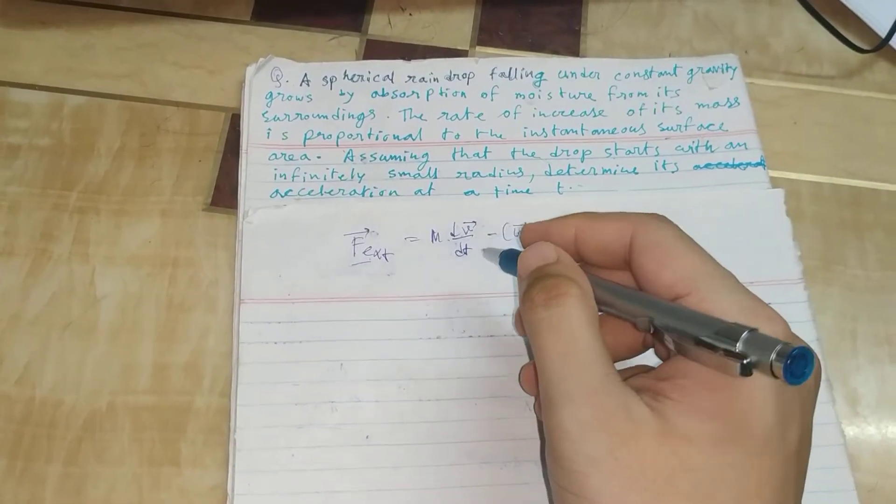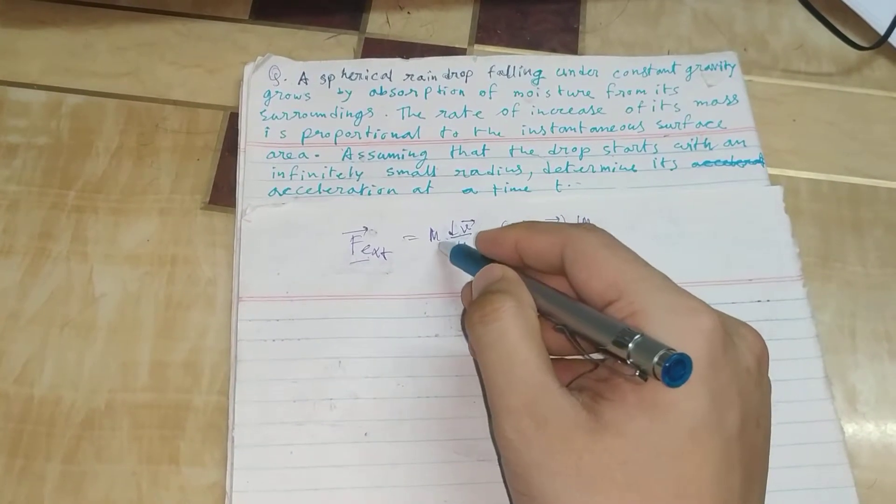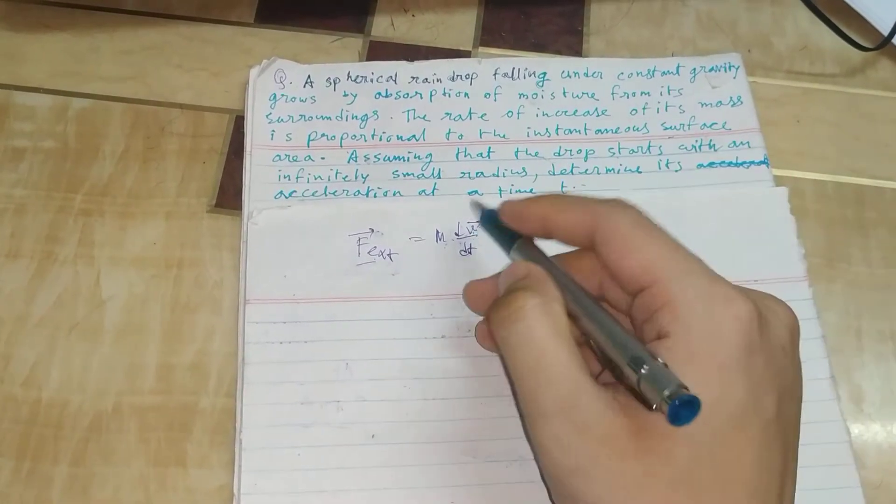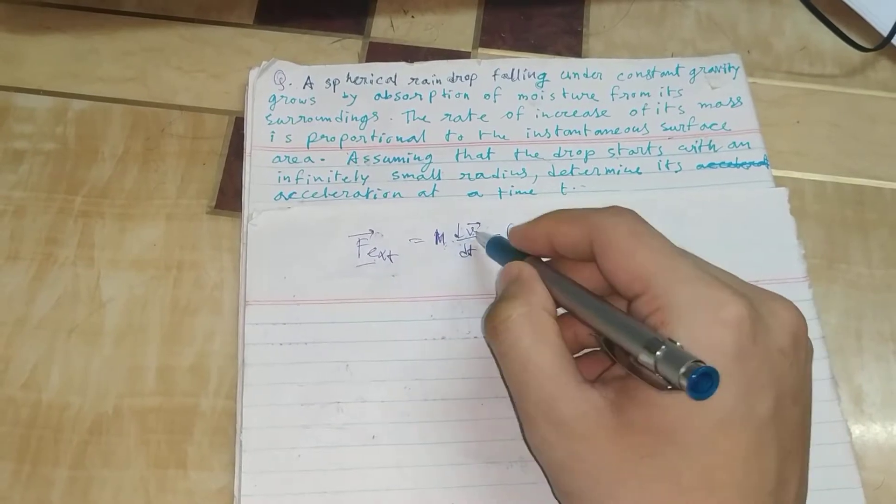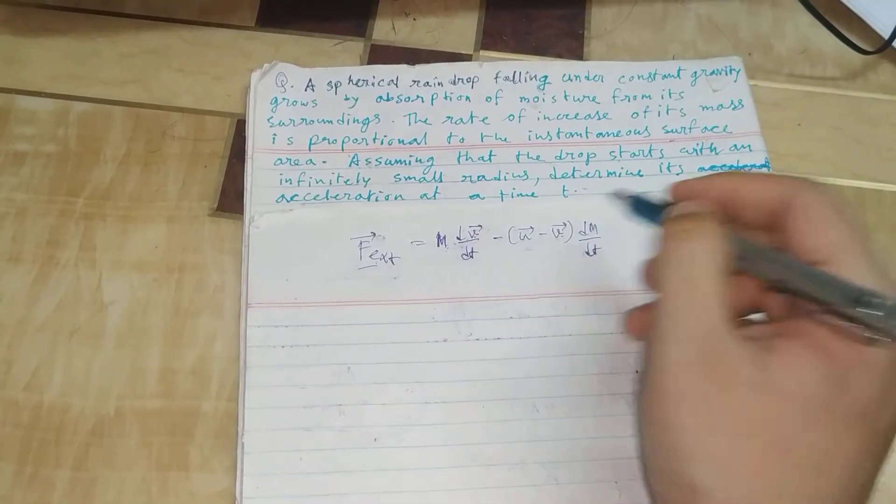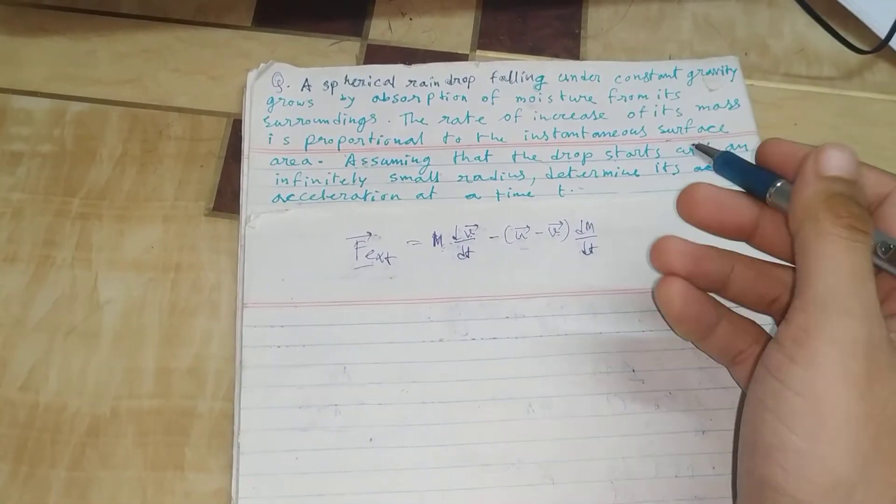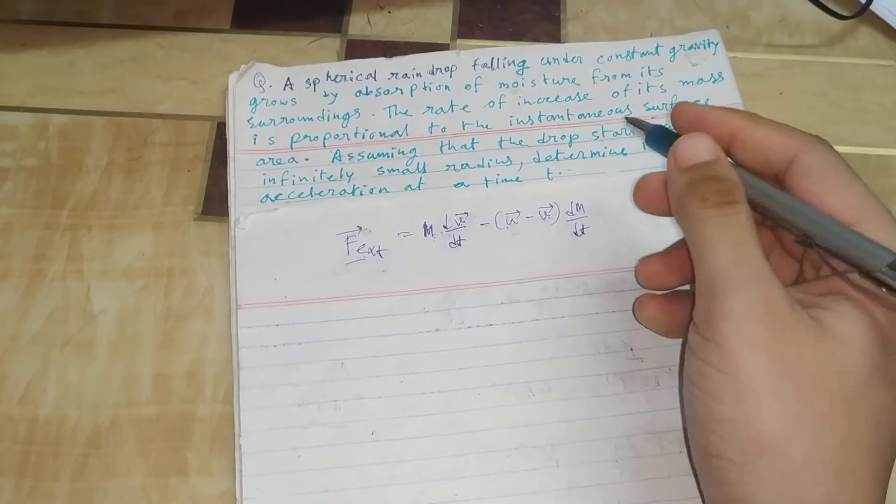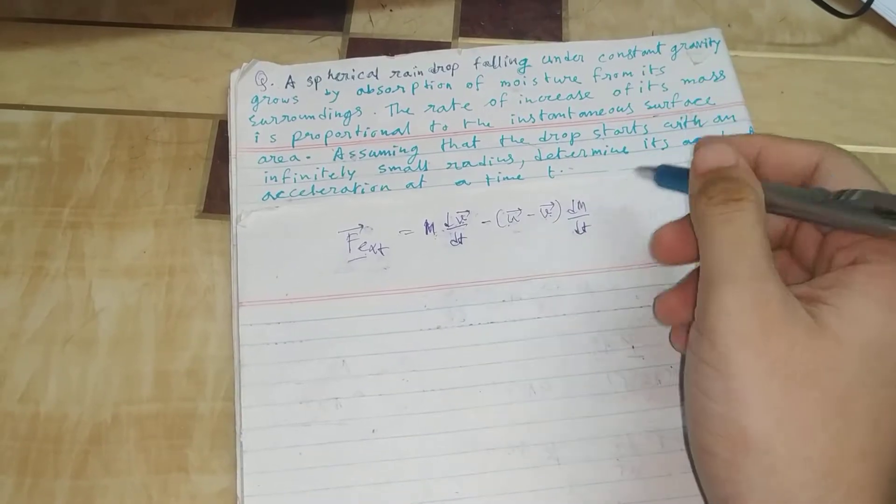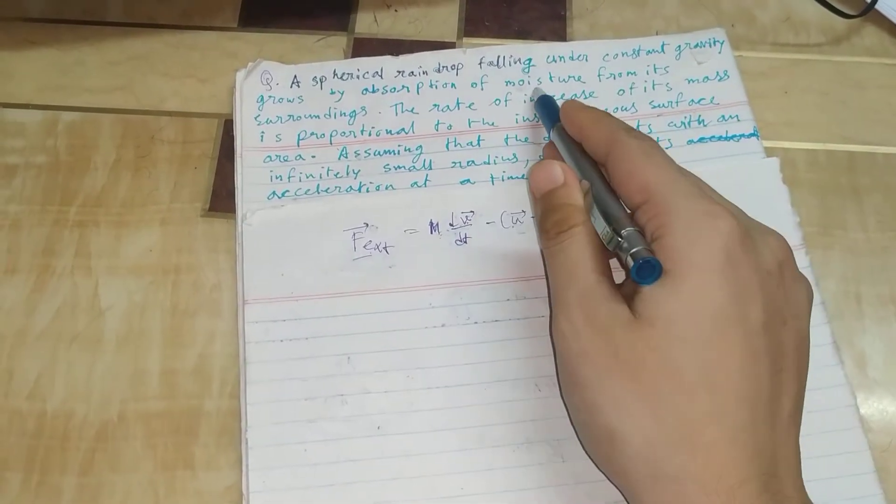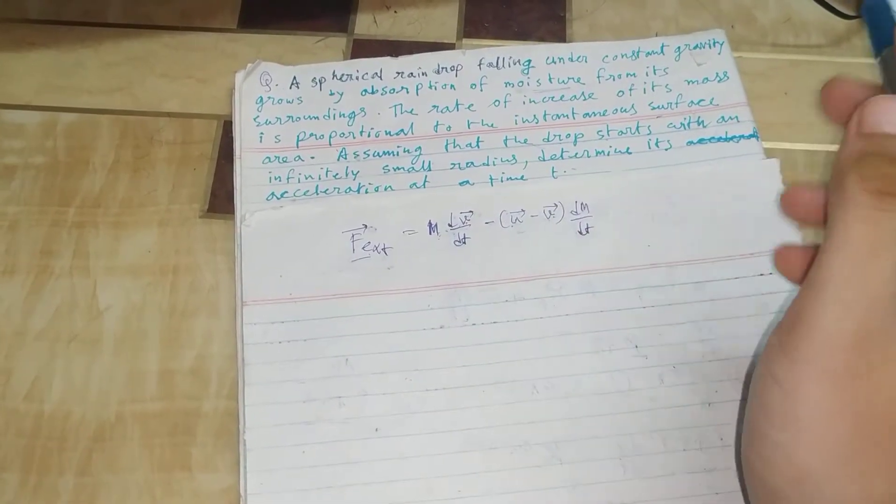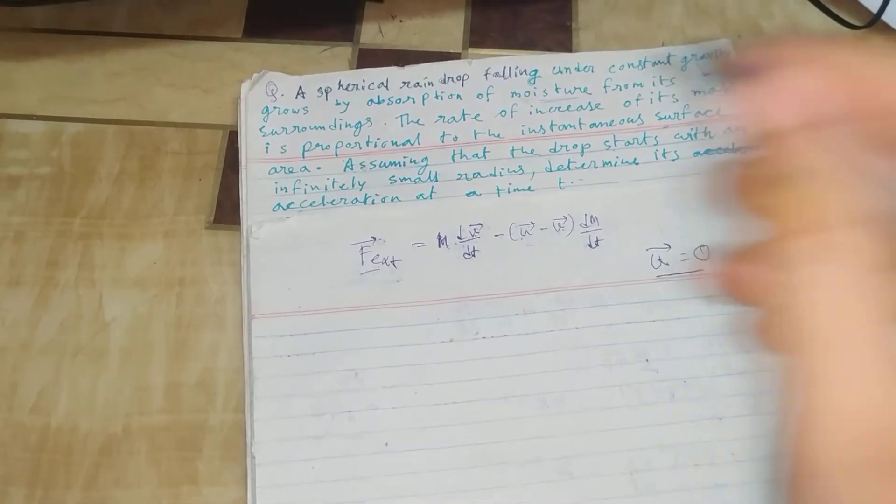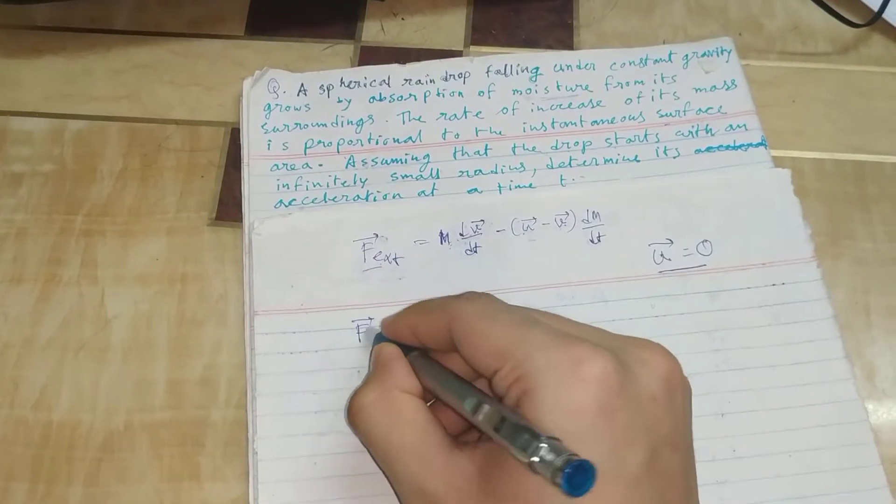In this case, that is nothing but mg. This m term is the instantaneous mass of the raindrop, v is the instantaneous velocity of the raindrop, and u is the instantaneous velocity of the moisture, which is zero. So as this u is zero, we get the equation mg = d(mv)/dt.